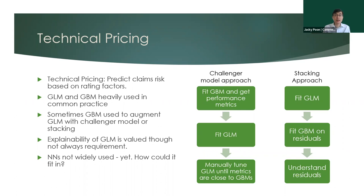The first application I'll talk about is technical pricing. The problem is this: we collect a bunch of rating factors when someone does a quote. They go to our website wanting a motor or travel insurance policy, put in their details, and a price comes out. Behind the scenes, that price is based on an estimate of the claims risk for that risk profile. Younger drivers are more likely to have a crash; older drivers less so.